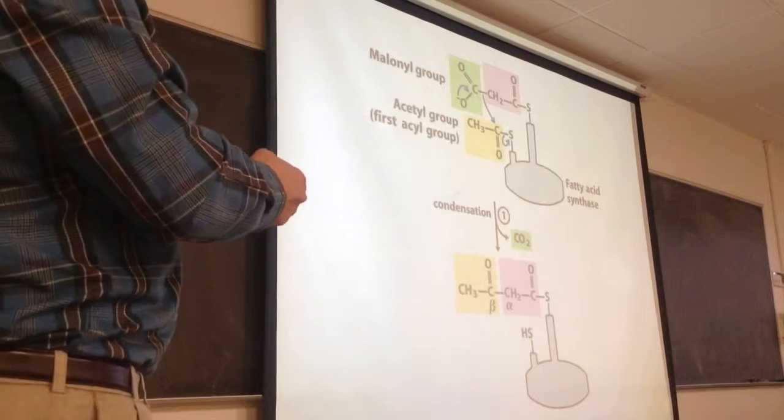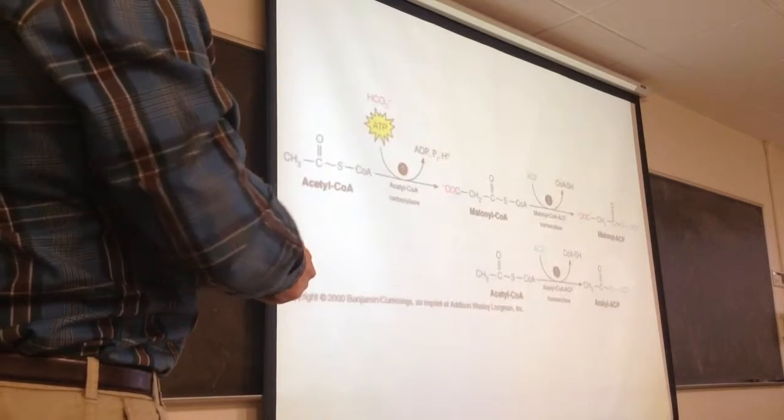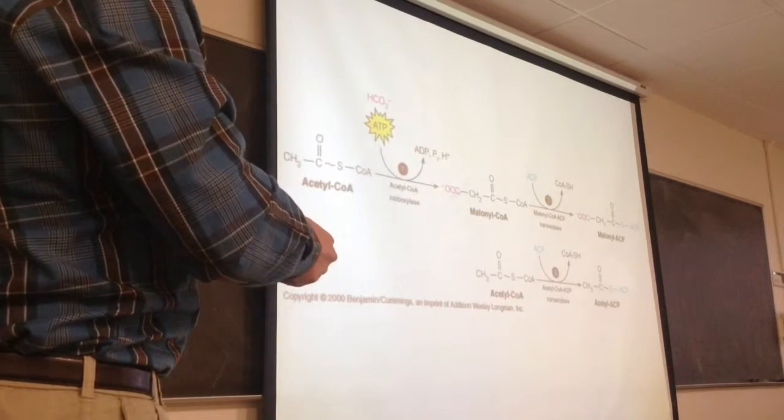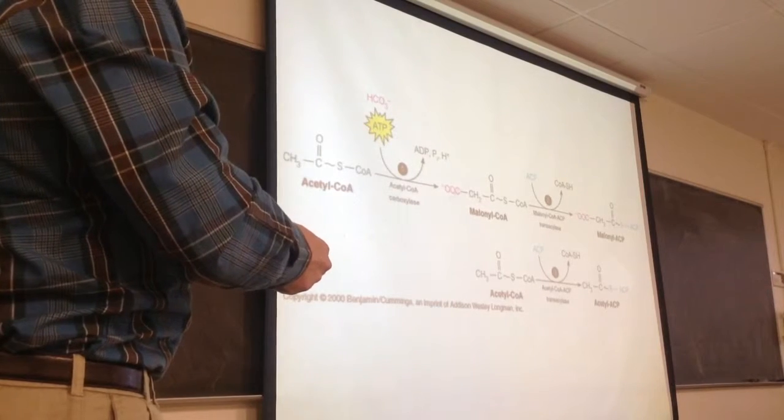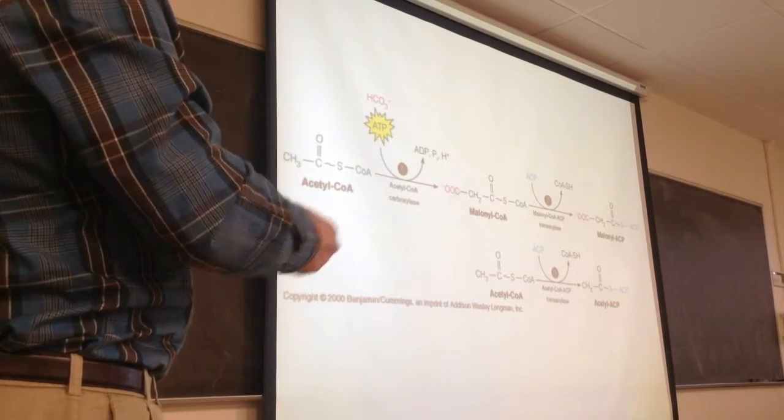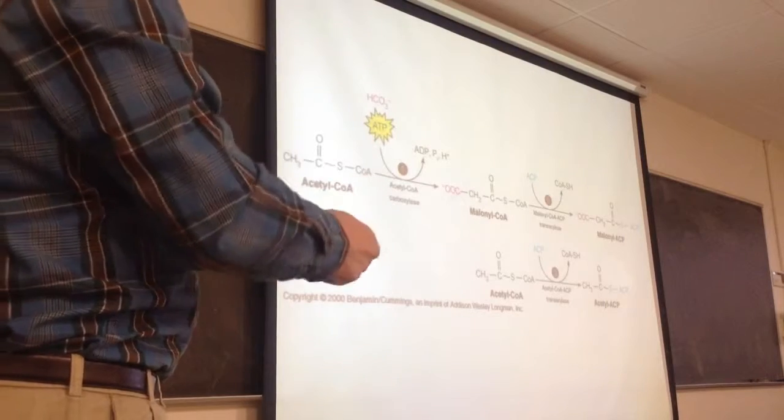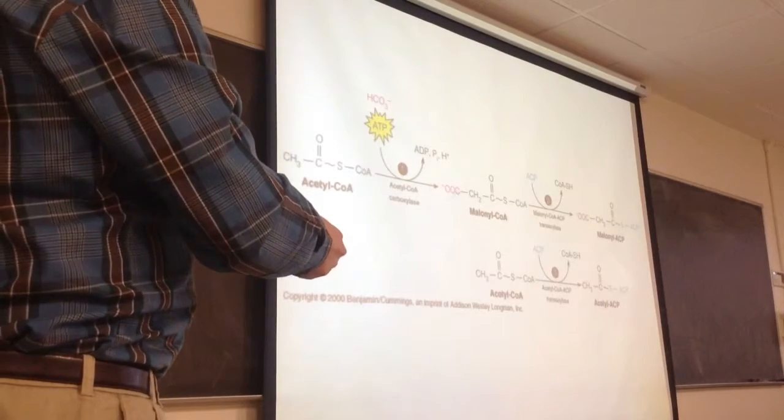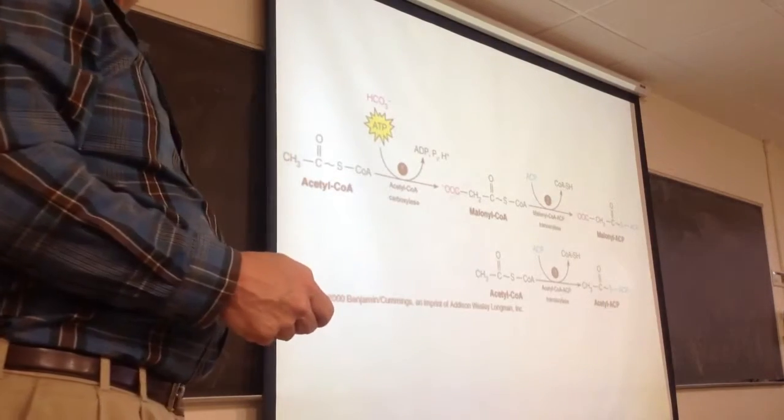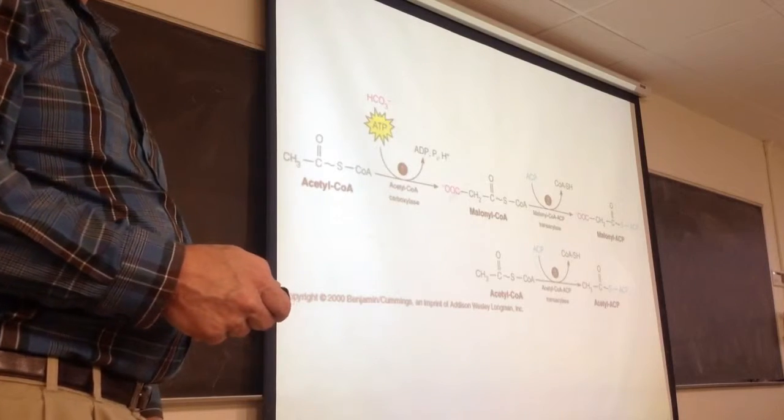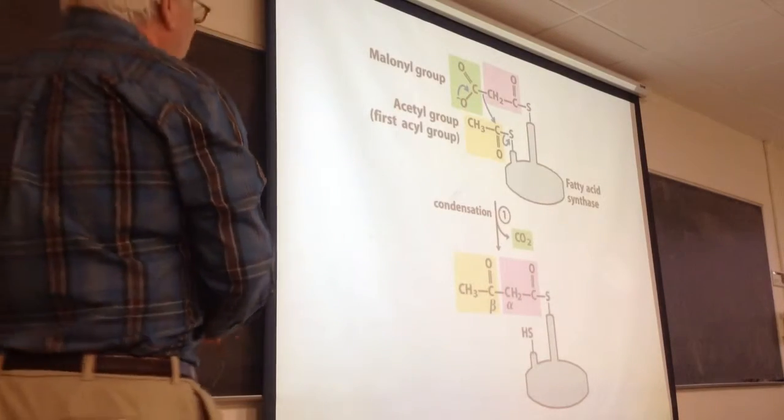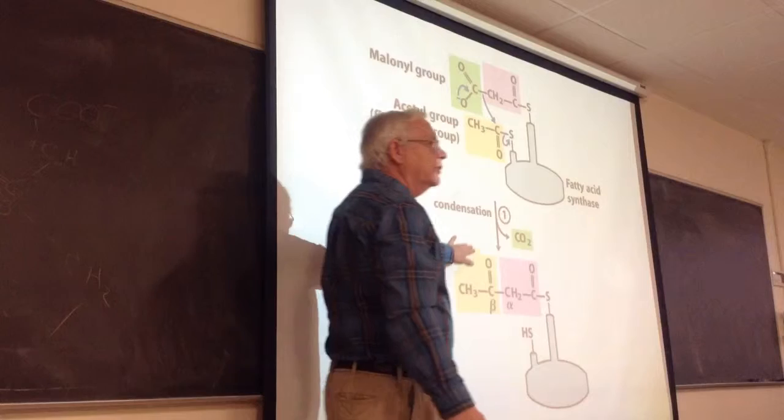Why does it do that? We just spent an ATP to add that carbon to make the malonyl-CoA. Now we're saying in the first building process, we started linking units together. The first step is to decarboxylate that. We just spent energy putting it on there. Why does that make any sense at all?